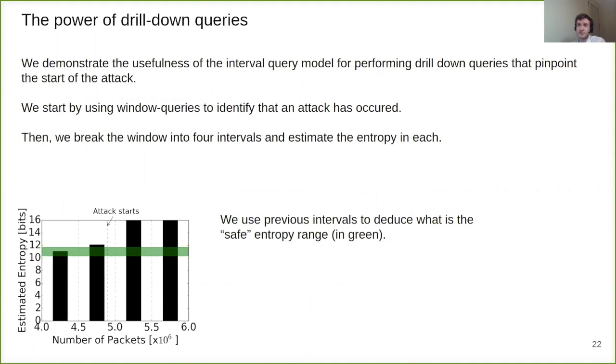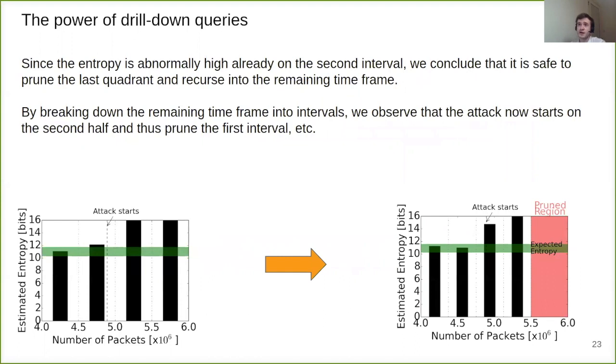We demonstrate the usefulness of the interval query model by performing drill down queries that pinpoint the start of the attack. We start by using window queries to identify that attack has actually happened. Then we break the window into four quadrants and estimate the entropy on each. We use the previous intervals to deduce what is the safe entropy range. Since the entropy is abnormally high already on the second interval, we conclude that it's safe to prune the last quadrant and recurse on the remaining time frame.